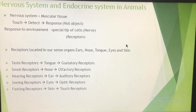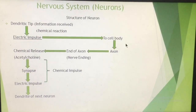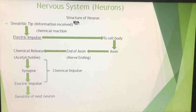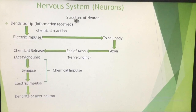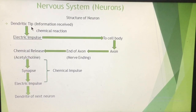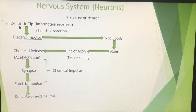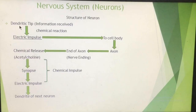Now let us talk about the neuron, or nerve cell, and its structure. When we talk about a neuron, there are small branched, tree-like structures known as dendrites. In a neuron, there can be one dendrite, two dendrites, or many dendrites.